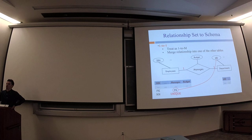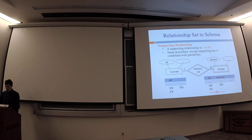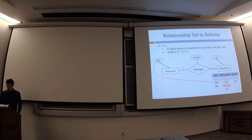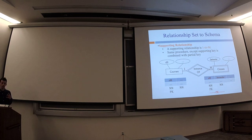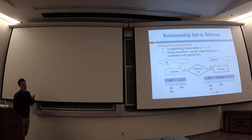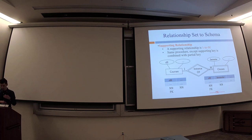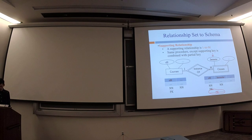If participation is mandatory on both sides, that creates a chicken-and-egg problem when the database is initially empty. For supporting relationships with weak entity sets, it's one-to-many, so we merge into the many side. The only special thing is that the primary key becomes the combination of the partial key and the foreign key that was merged in.